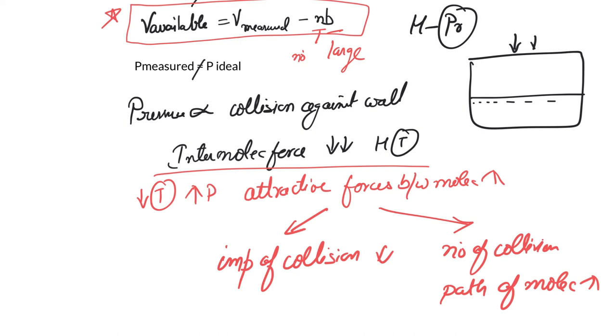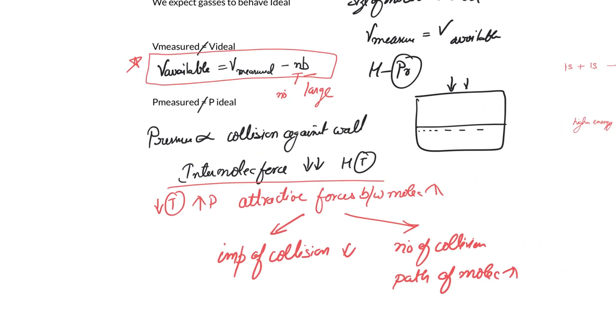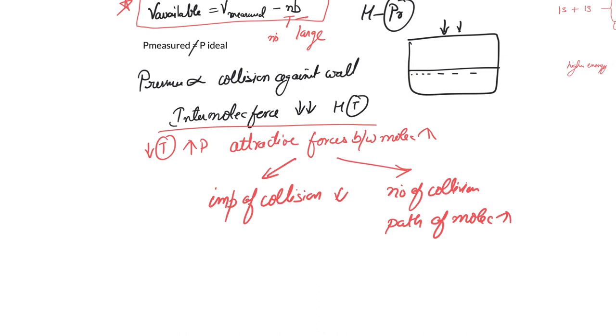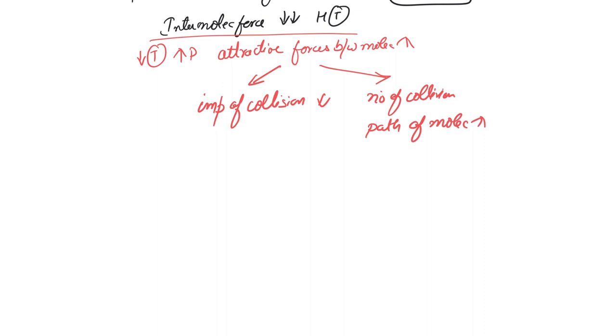The number of collisions that happen at a specific unit of time also decrease. Why? Because now the path of the molecules increases. They don't take a straight path anymore, rather they take a curved path because of the attractive forces. Hence we need to introduce a correction factor even for pressure. The V available decreases the pressure. The real pressure ideally exerted is not what the gas shows, so we say P measured equals P ideal and we must subtract a correction factor, that's n squared a over v squared measured.